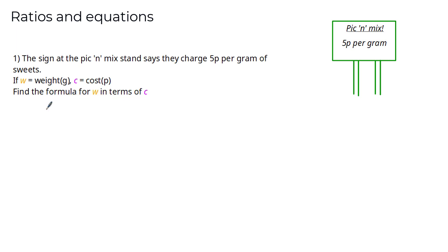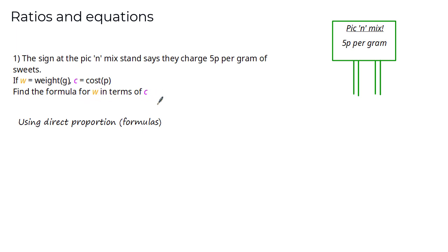Now this hasn't been included in the question, but assuming we were told that the variables w and c are directly proportional, we can use methods from previous tutorials. Assuming direct proportionality, we can write w ∝ c and therefore w = k × c, where k is a constant to be found.